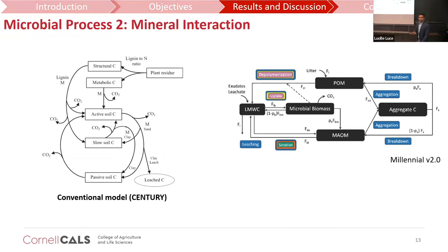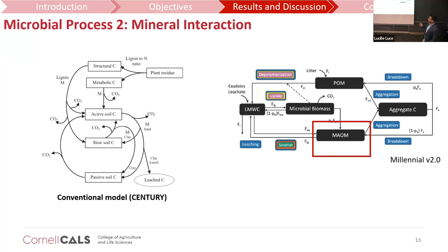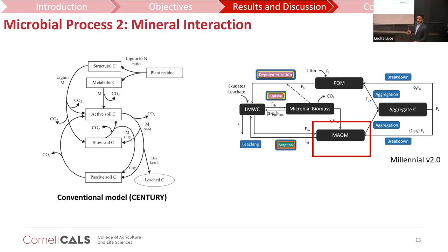Not all soil organic carbon decomposition leads to CO2 in the atmosphere — some is stabilized in the soil. In microbial models, this is represented by mineral interaction, where microbes decompose soil organic carbon and the carbon gets attached to the clay component. Clay components protect soil organic carbon from microbes, so microbes are not accessible to it and that organic carbon is stabilized. Conventional models that don't explicitly represent microbial biomass assume decomposition depends entirely on chemical properties.